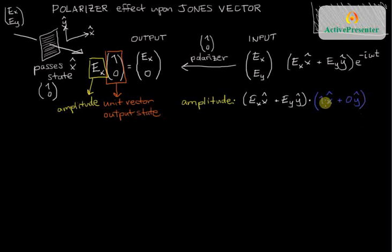That's certainly going to tell me how much x-component there is in this initial input state. In general, I wouldn't use 1 x-hat and 0 y-hat. If the polarizer was tilted at some angle, then I would have different coefficients for the x-hat and y-hat, but this one's particularly easy to see.